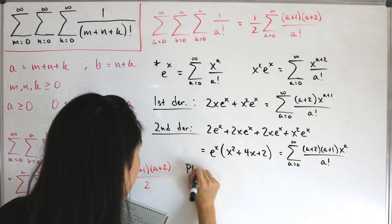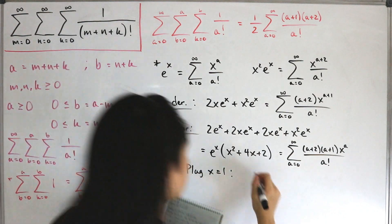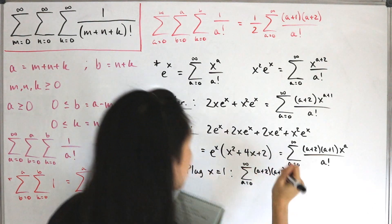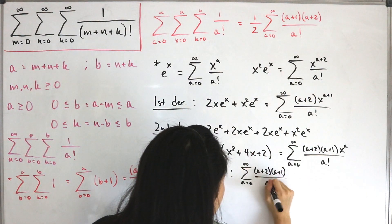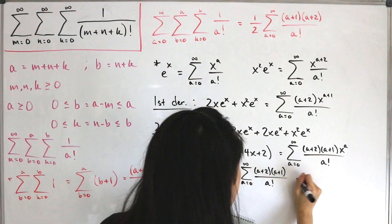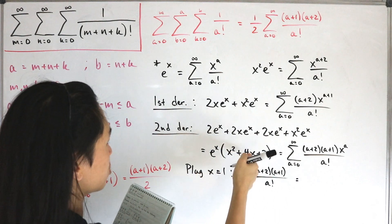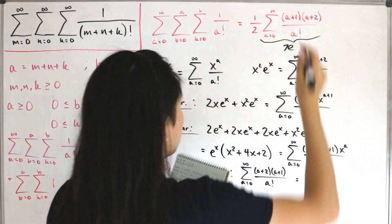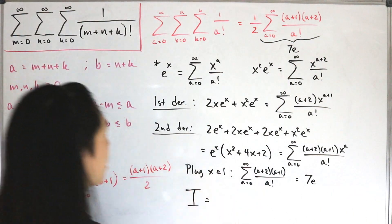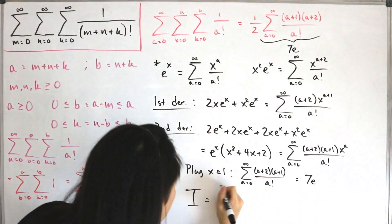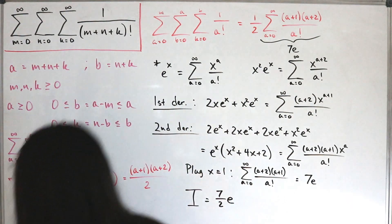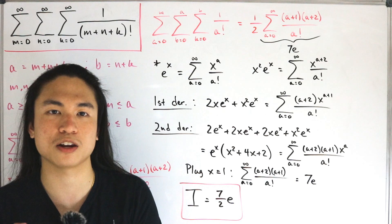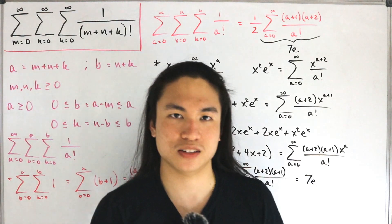Plugging in x equals 1, the series side becomes the sum from a equals zero of (a+2)(a+1)/a!, which is exactly what we have. On the left side, e^1 · (1 + 4 + 2) = 7e. So calling our original sum I, we have I = one-half times 7e, giving a final answer of 7e/2. It seems like you'd be stumped, but with the right substitution it comes down to something nice.